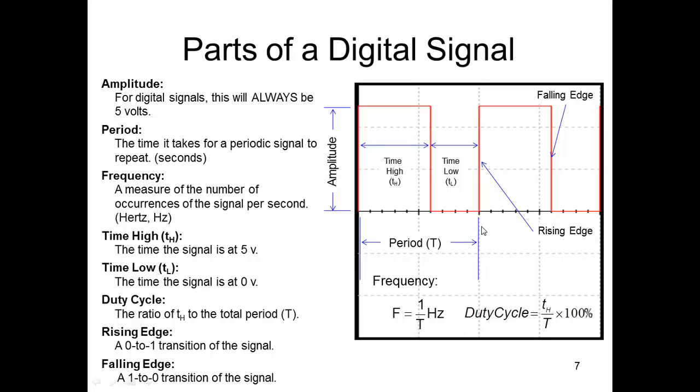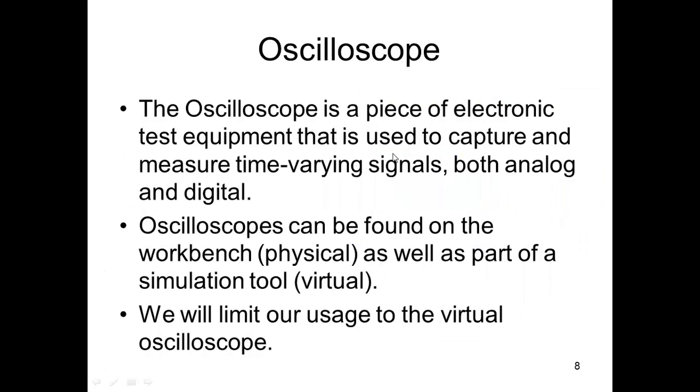Alright, and we say that a rising edge is when we go from a zero to a one or from zero volts to five volts, and a falling edge is from a one to a zero. So here's a falling edge. Here is a falling edge.